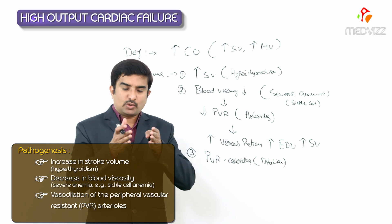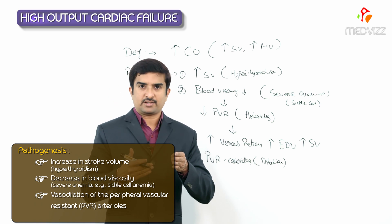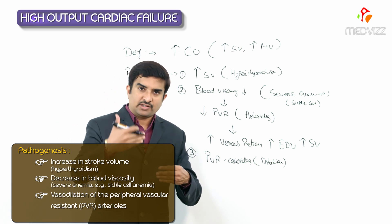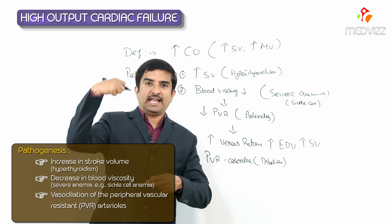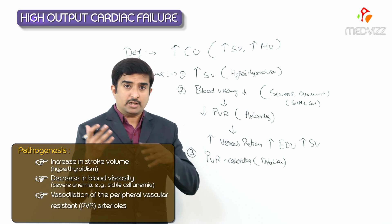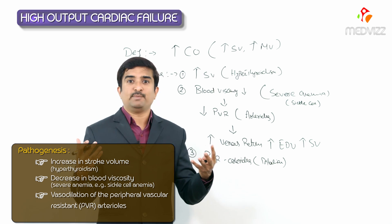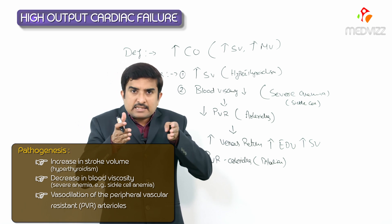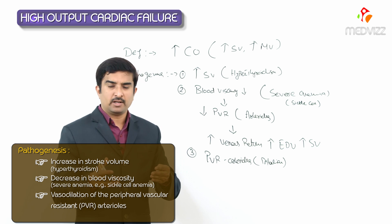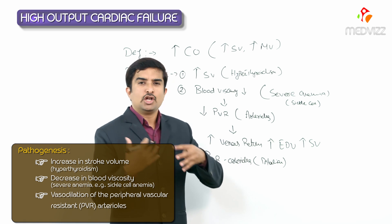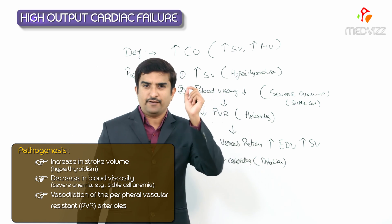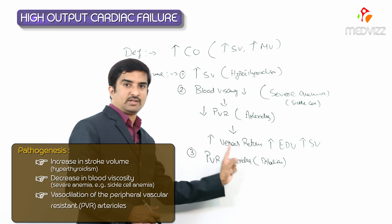Whenever there is vasodilation, resistance decreases. It is like a dam — the dam is the one which actually creates resistance. Once you open the dam gates, there will be full flow of water down the gradient because the resistance has been removed. In the same way, whenever the vessels are dilated, resistance drops automatically. When resistance drops, there will be a rush of blood to the veins and an increase in venous return because of vasodilation of the peripheral vascular resistant arterioles.